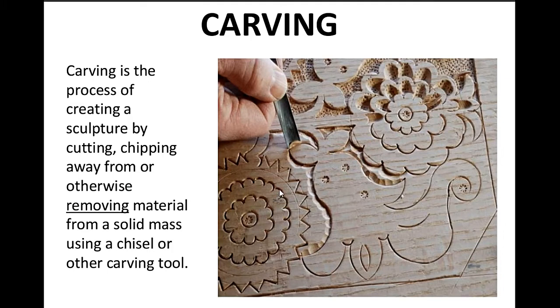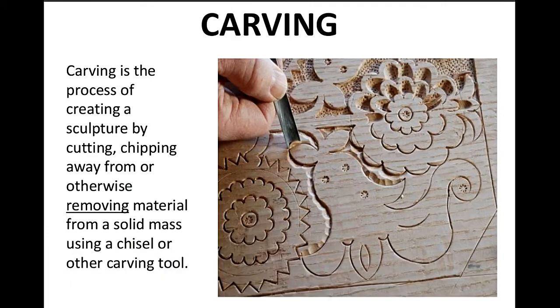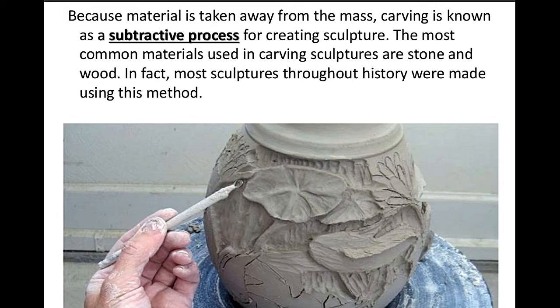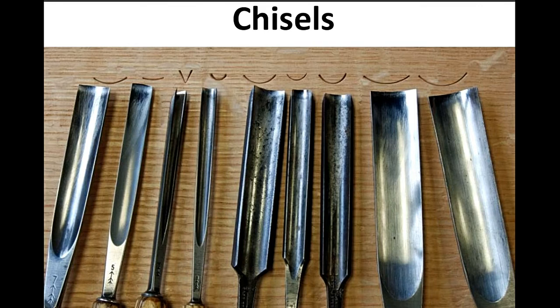Carving is the process of creating a sculpture by cutting or chipping away and otherwise removing material from a solid mass using a chisel or other carving tool. Because material is taken away from the mass, carving is known as a subtractive process for creating sculpture. The most common materials used in carving sculptures are stone and wood. In fact, most sculptures throughout history were made using this method. The tools in carving are called chisels, and there are different types of chisel.